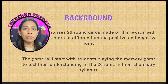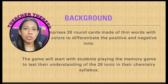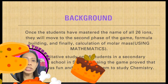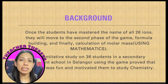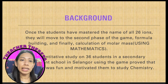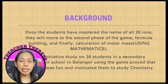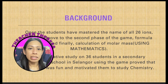The game will start with students playing the memory game to test their understanding of the 26 ions in the chemistry syllabus. Once students have mastered the names of the 26 ions, they will move to the second phase of the game — formula building — and finally calculation of molar mass using mathematics.